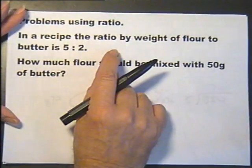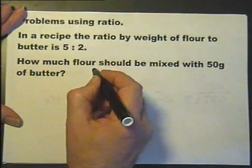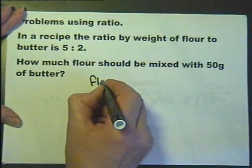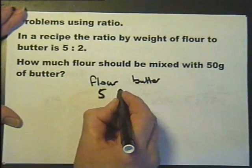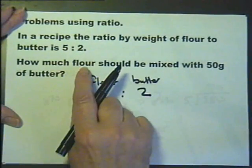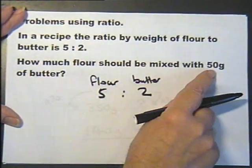In a recipe, the ratio of flour to butter... Oh, it's the same recipe. It's 5 to 2. How much flour should be mixed with 50 grams of butter?